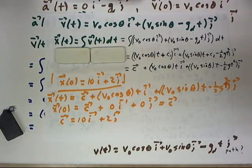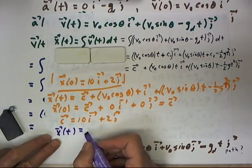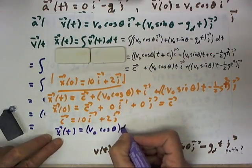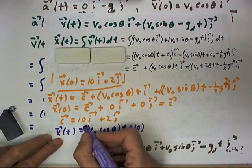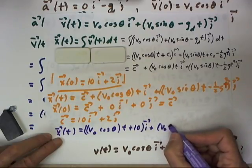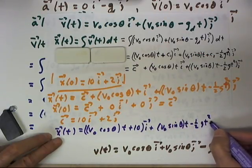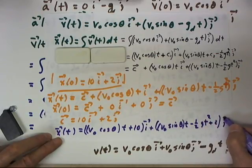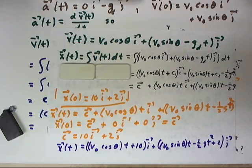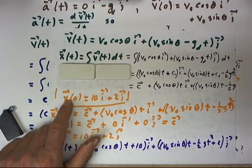And we conclude then that c for this integration is 10i plus 2j, and the final form of our function is x of t equals v naught cosine theta times t plus 10 multiplied by i plus v naught sine theta t minus one-half g t squared plus 2 quantity multiplied by j. So this function satisfies our original constant acceleration with our assumed initial velocity and our assumed initial position.